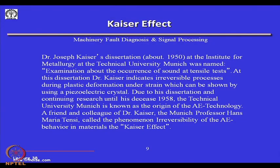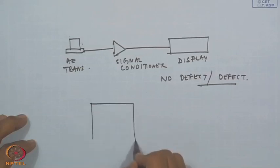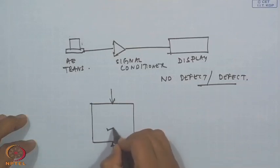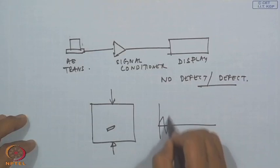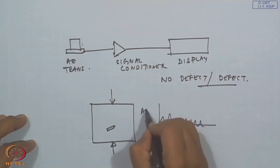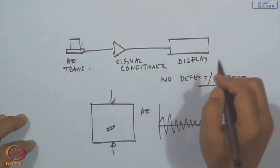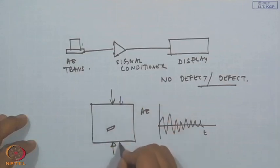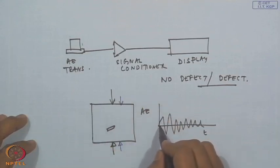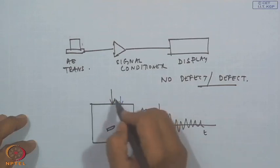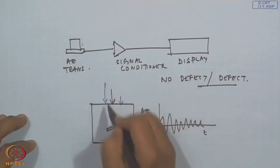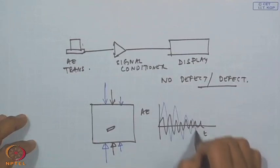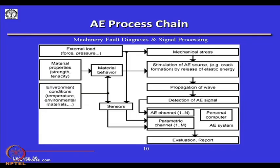To illustrate the Kaiser effect: suppose a machine has been stressed and there is a defect, so we are getting some acoustic emission signal. In the next instance, if it is stressed less than this, the acoustic emission signal will not be realized until we reach a new level of stress higher than the previous one — only then do we get a significant signal. This is essentially the Kaiser effect.